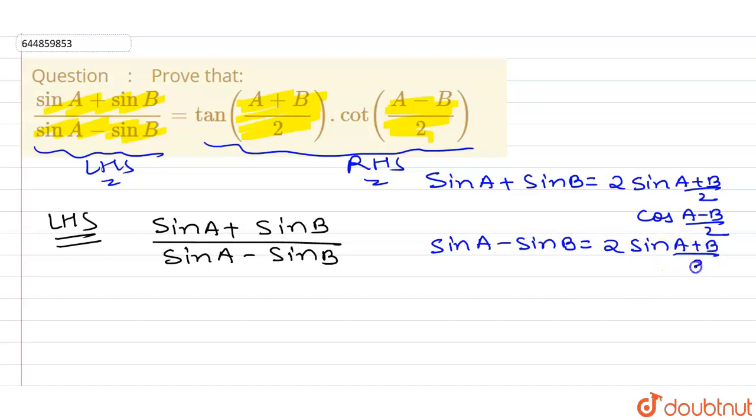Similarly, sine A minus sine B is equals to 2 cos A plus B by 2 sine A minus B by 2.